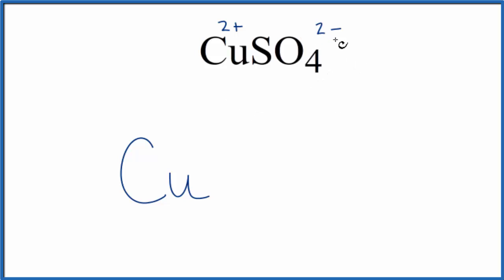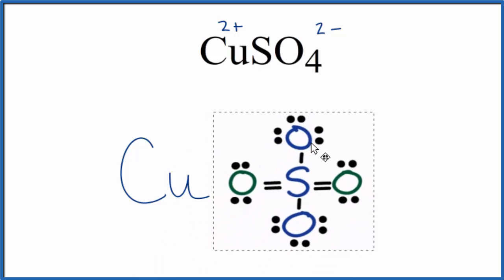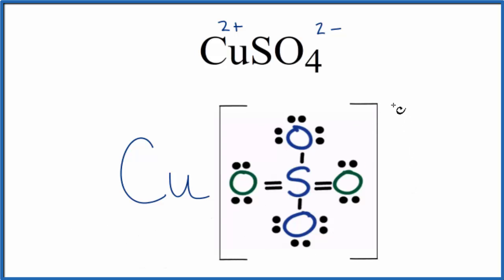For the sulfate, rather than draw the entire Lewis structure - I have a video that explains it in great detail - here is our sulfate ion, SO4. Again, this whole thing is 2-. So let's put brackets around it, and then we'll put our 2- charge on the outside of the brackets.